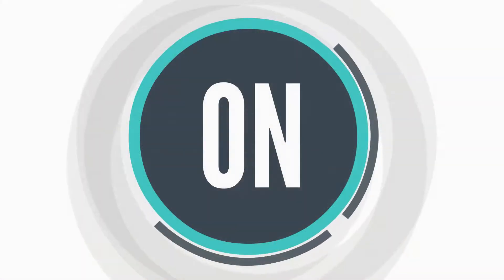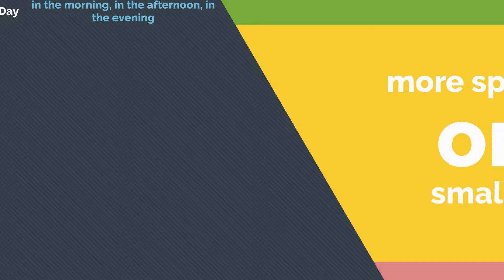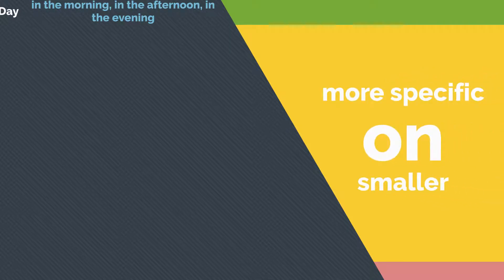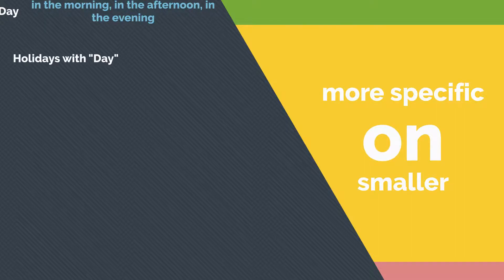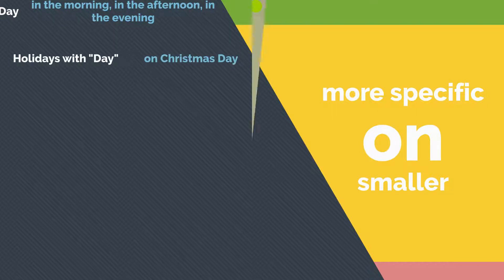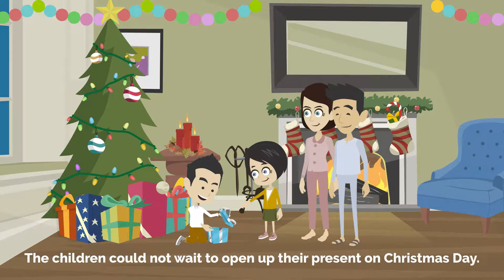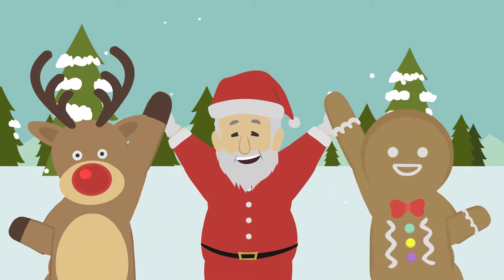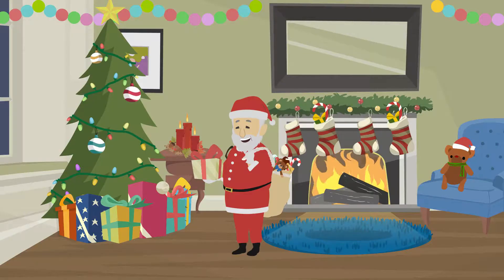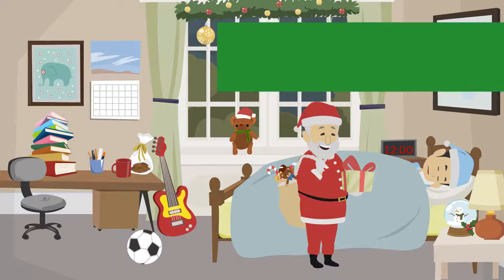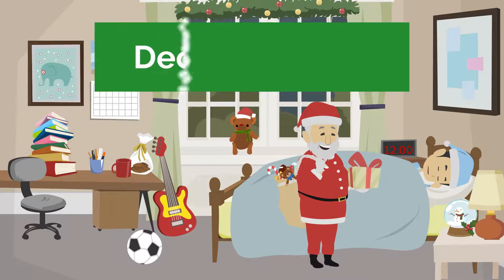Now, let's look at the preposition on. This is more specific than in. It can be used with holidays with day, such as on Christmas day. For example, the children could not wait to open up their presents on Christmas day. Previously, we used in to talk about the whole Christmas holiday. However, now we use on to specify on Christmas day — in other words, we are only talking about December 25th.